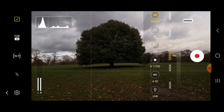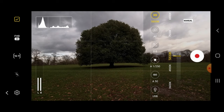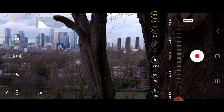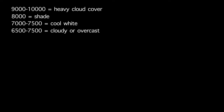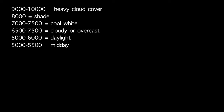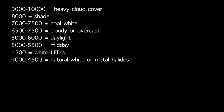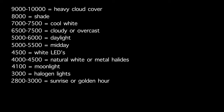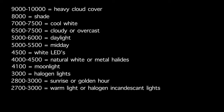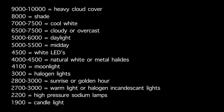White balance is a camera setting that adjusts the color balance of the light you're shooting in so that it appears a neutral white. Adjust white balance (WB) in your camera to match the color temperature of your scene. Key values: 9,000–10,000K is heavy cloud cover; 8,000K is shade; 6,500–7,500K is cloudy/overcast; 5,000–6,000K is daylight; 5,000–5,500K is midday; 4,500K is white LEDs; 4,100K is moonlight; 3,000K is halogen; 2,800–3,000K is sunrise/golden hour; 2,700–3,000K is warm/incandescent light; 2,200K is high-pressure sodium; 1,900K is candlelight.